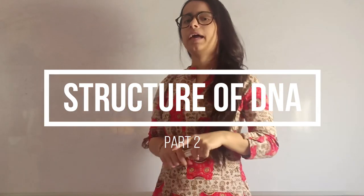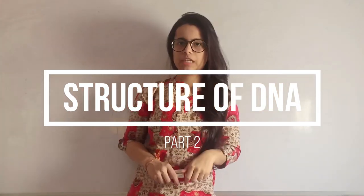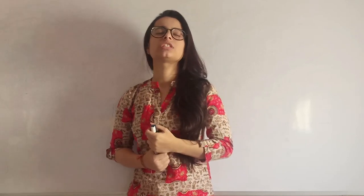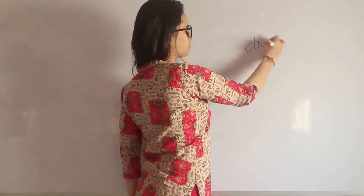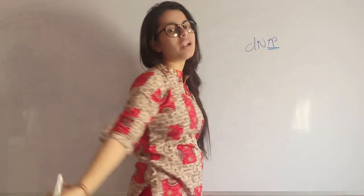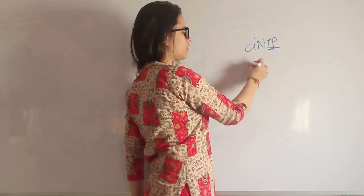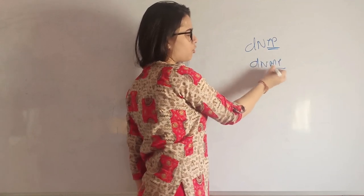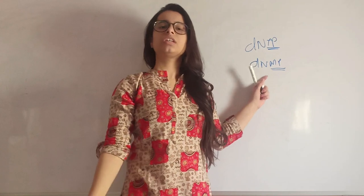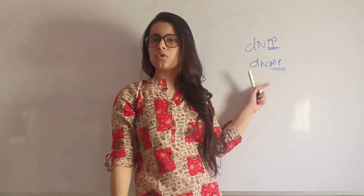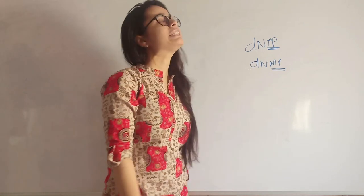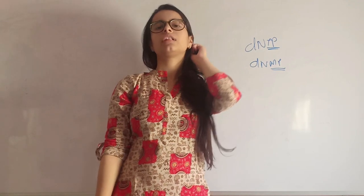Hello everyone, welcome back to part 2 of the structure of DNA. Before this, we just covered two nucleotides. I explained in the intermediate video that there could be two types of nucleotides: DNTP, which has a triphosphate group, and dNMP, which has a monophosphate group. To form a single strand of DNA, we need a monophosphate nucleotide.